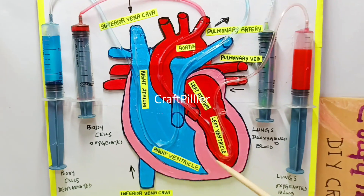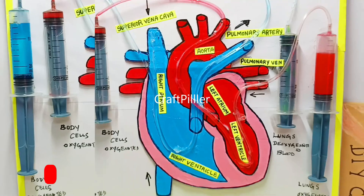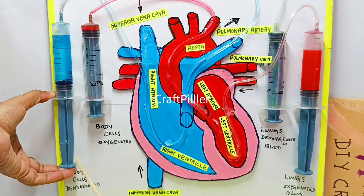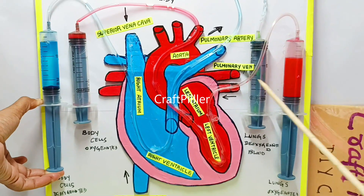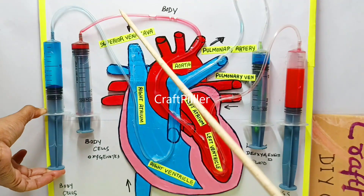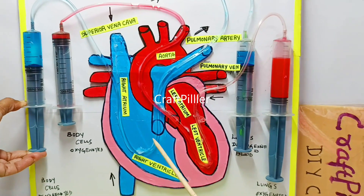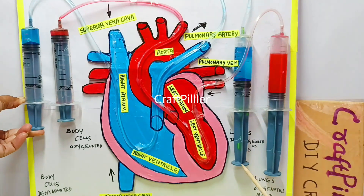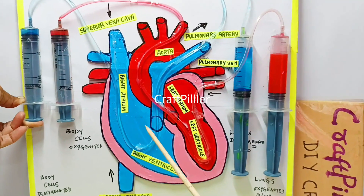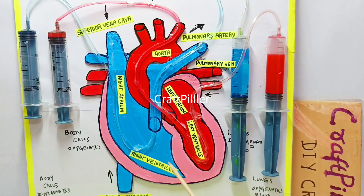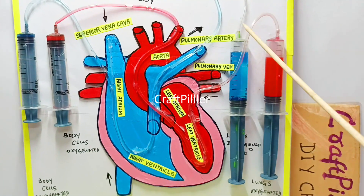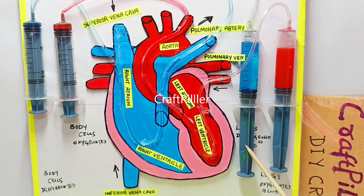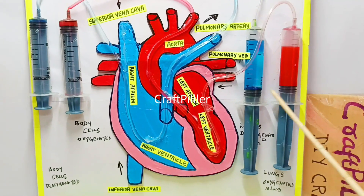Now we will demonstrate how this working model really works. We are trying to pump the deoxygenated blood from the heart to the lungs — that is the concept we are showing here. As you can see, the deoxygenated blood is moving from right atrium to right ventricle to pulmonary artery, going to the lungs so that deoxygenated blood can be made oxygenated.